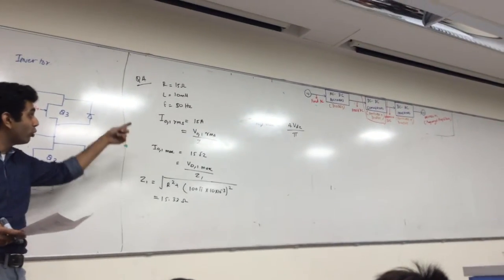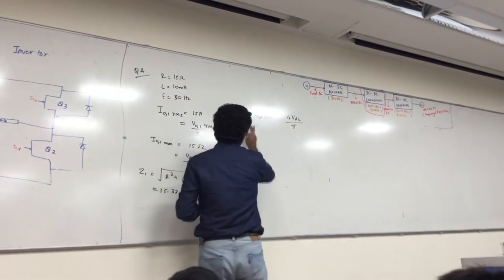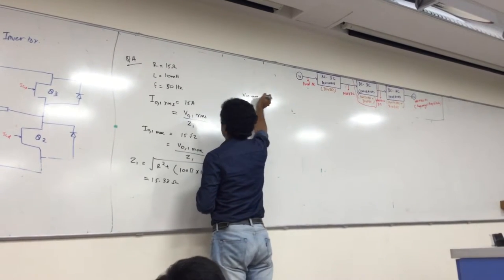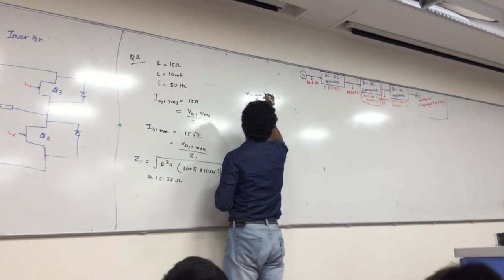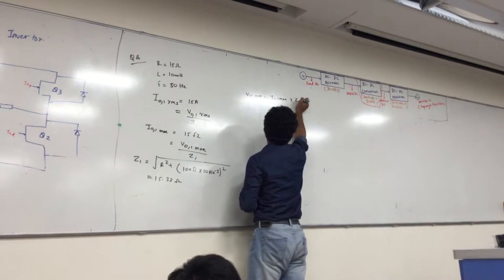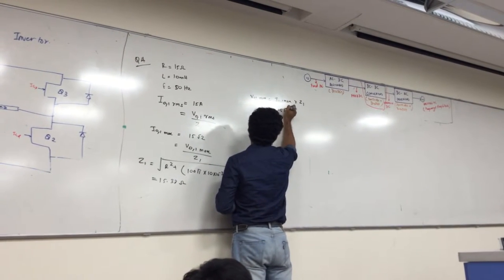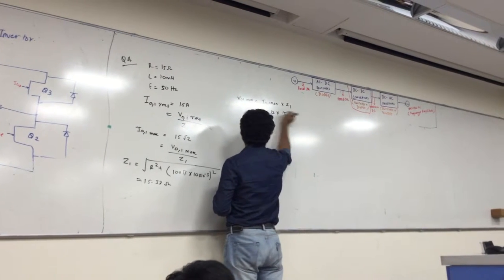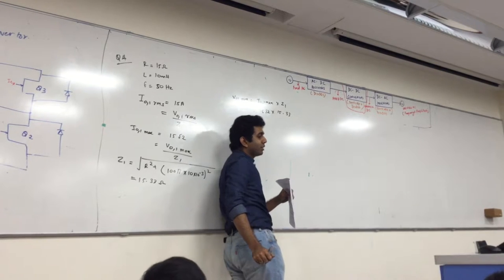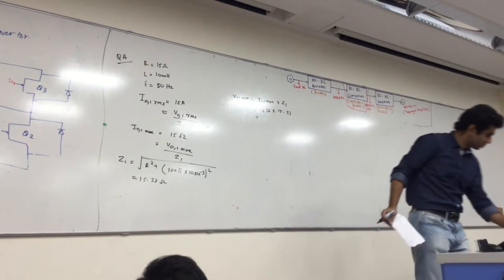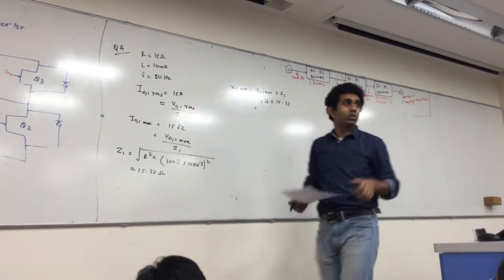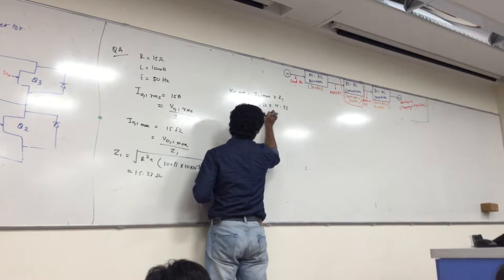So what is this value? It's 50 squared plus 100π times 0.01, so it's just π squared, something like that. You get some value like 15.33. So can I say what is VO1 max? It's going to be IO1 max into Z1, which is 15 root 2 into 15.33, which is 325.1.